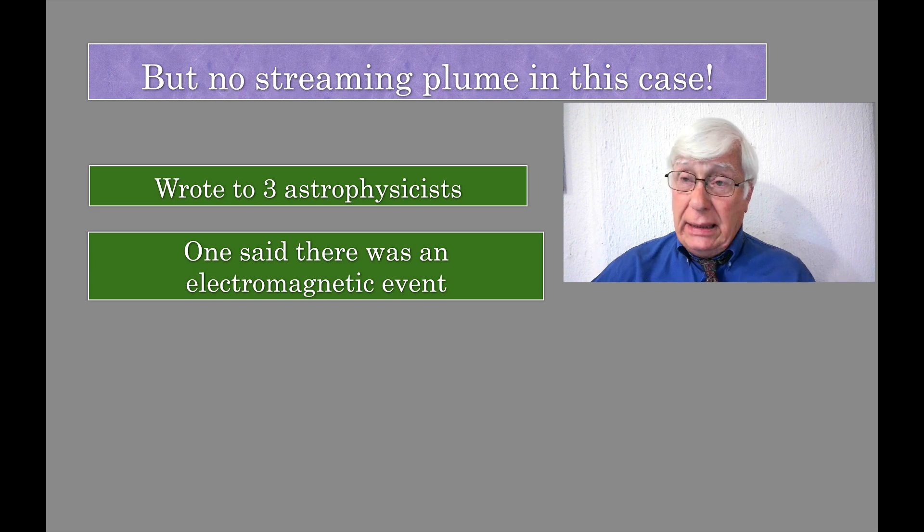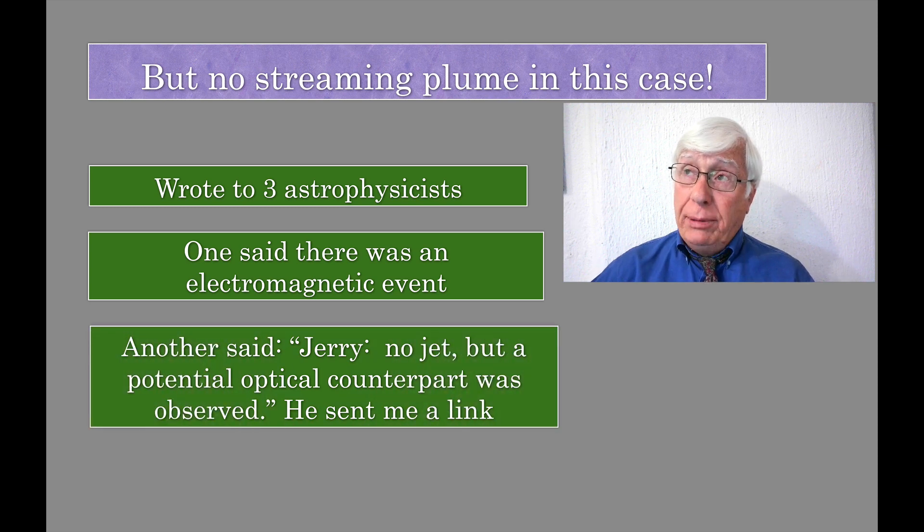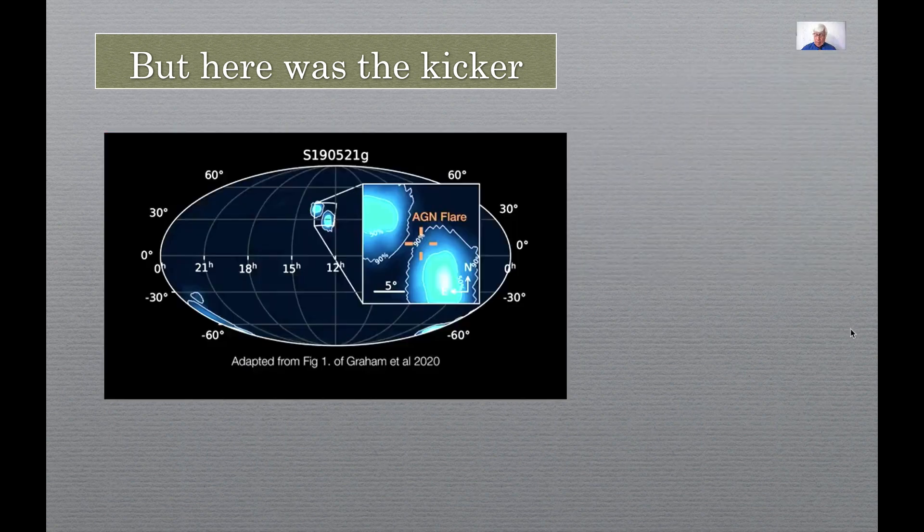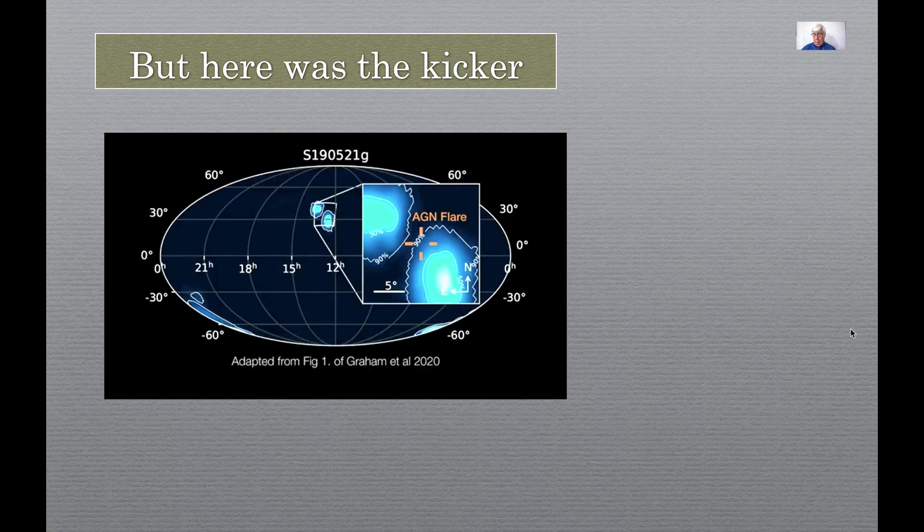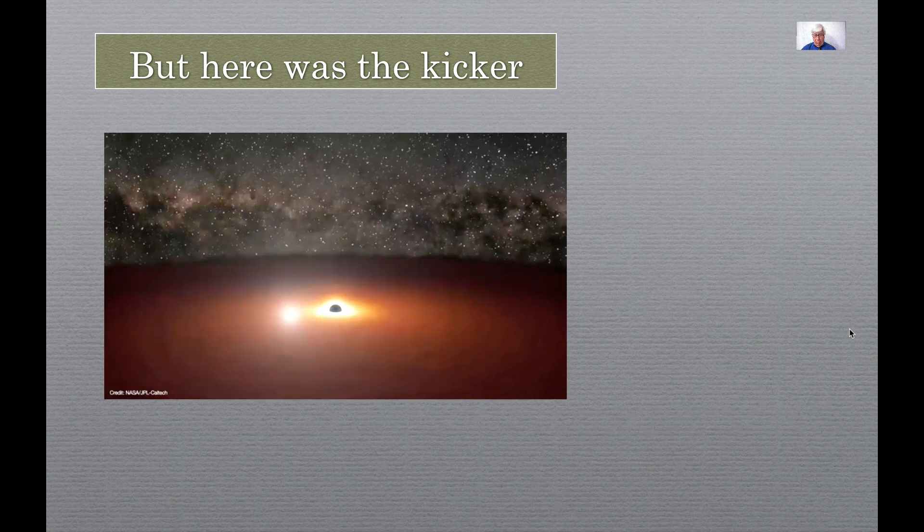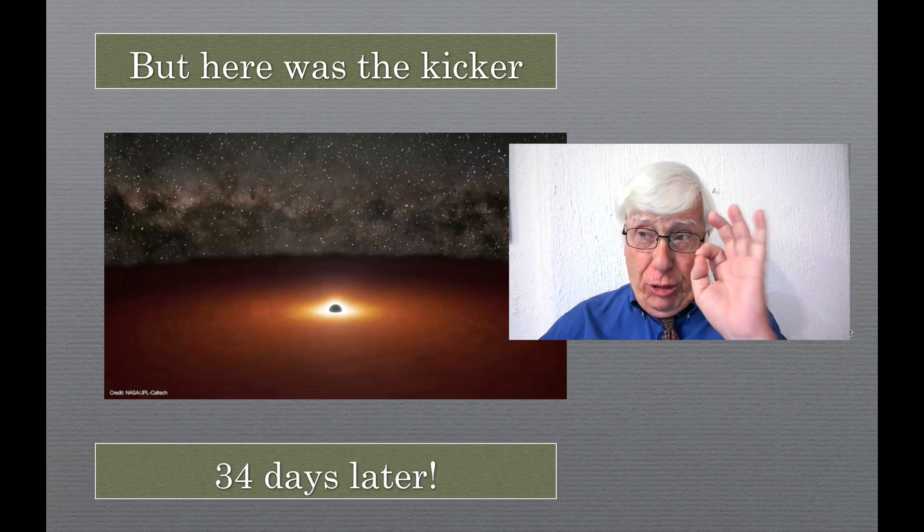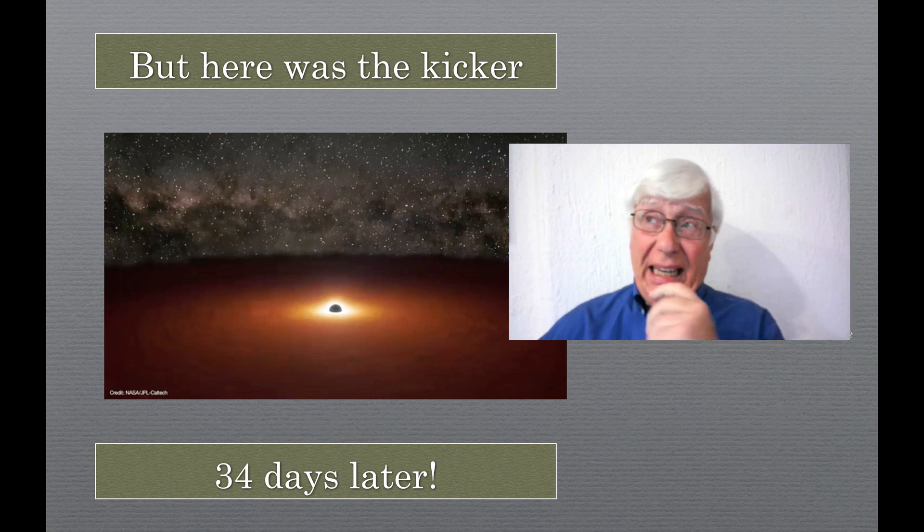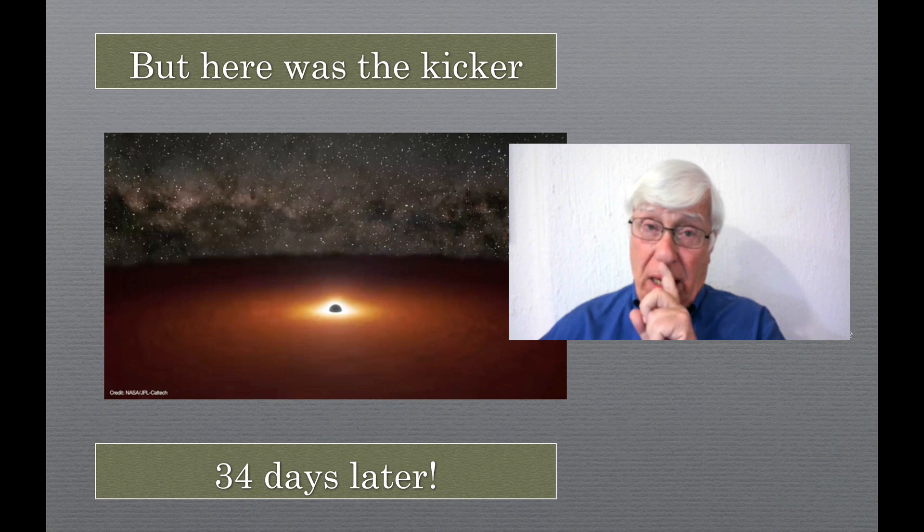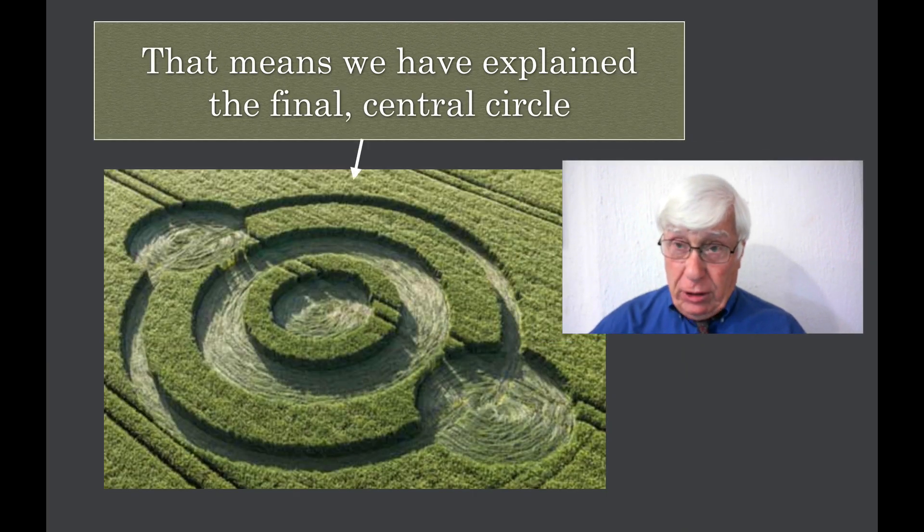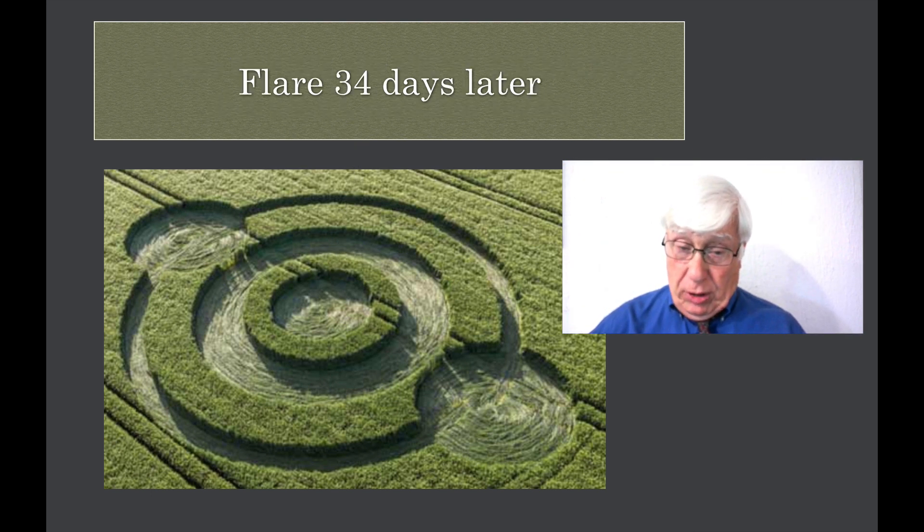So one of the astrophysicists wrote back and said, yes, indeed, there was an electromagnetic event afterwards. Another said, Jerry, no jet, but a potential optical counterpart was observed, and he sent me a link. Here's the kicker. In June 2020, an independent team announced a quasar flare in the same part of the sky as GW190521. The flash was spotted about 34 days after the gravitational waves were detected. According to their model, the black hole shot out of the disk, heated it up, and caused the flare. So that happened 34 days after the black hole merger, 33 days after the crop circle.